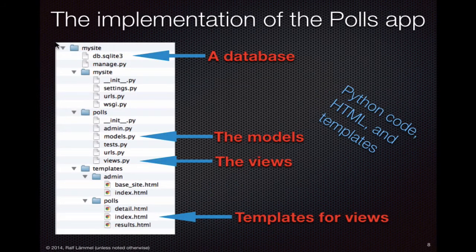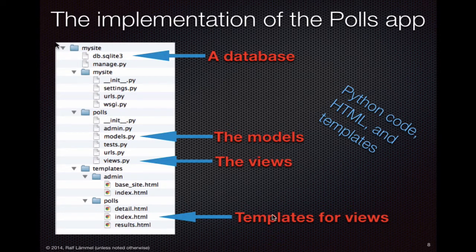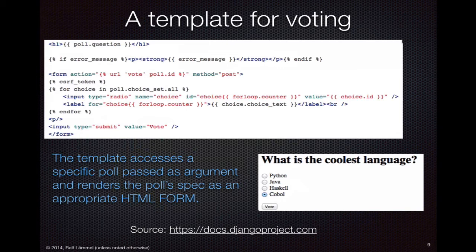We will eventually look at the implementation of the Poll application. In this course, we will use Python as our preferred programming language. What you are seeing here is just the layout of the implementation in terms of the files involved. We have a database, lots of Python modules, the implementation of the object model, views for the user interface, and templates that describe the mapping from data to views for the user. We also use a template language that is part of the Django framework of Python for the web applications we are building.